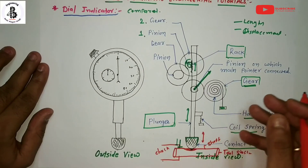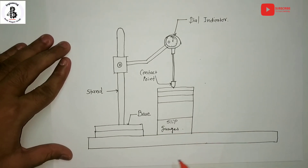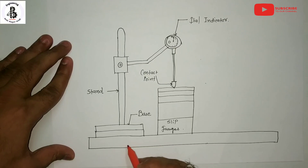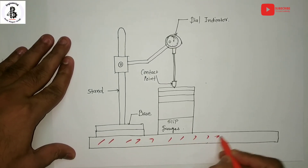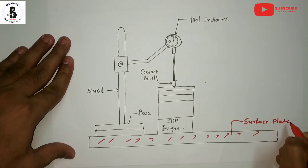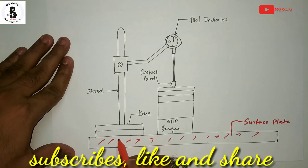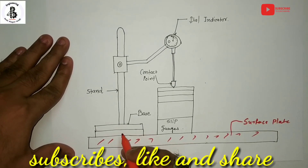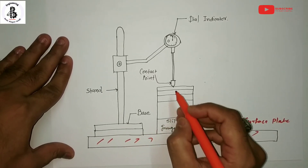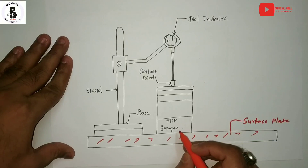Now let us see different applications of the dial indicator. The dial indicator, with the application of a stand, is attached onto a surface plate. A magnetic stand is mounted onto the surface plate, and initially the measurement is set according to standard dimensions. First, it is connected with a standard measuring job, using a linear measurement standard.